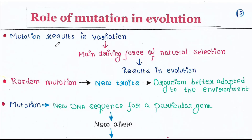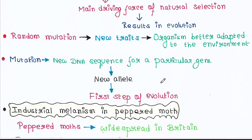So we know that mutation results in variation, and variation is the main driving force of natural selection, which results in evolution. Random mutations can lead to new traits which make an organism better adapted to its environment. Mutation is the first step of evolution because it creates a new DNA sequence for a particular gene, creating a new allele.